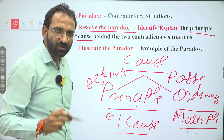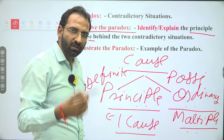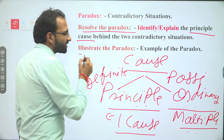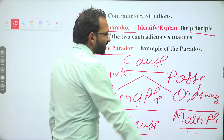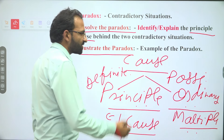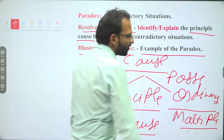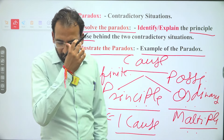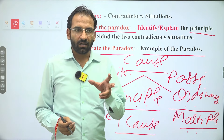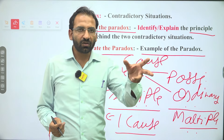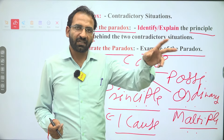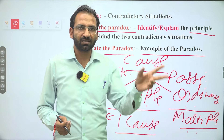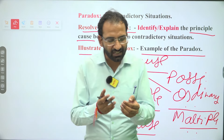In the result of the paradox, the principal cause has no possibility chances — clear. Last: illustrate the paradox. Illustrate the paradox is giving an example of the paradox.